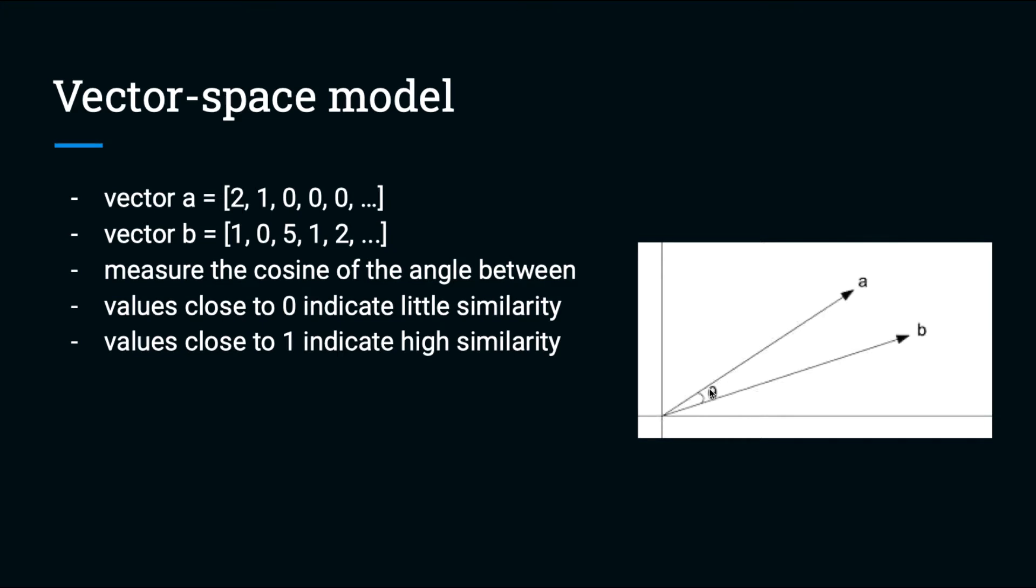The cosine function ranges from negative one to positive one, but in our vector space model, since all of our values will be positive numbers, the cosine will actually range from zero to one. Values close to zero will indicate little similarity between the documents, and values closer to one indicate a high similarity.